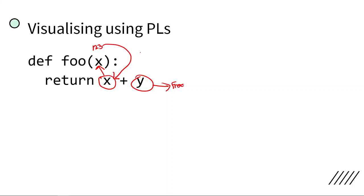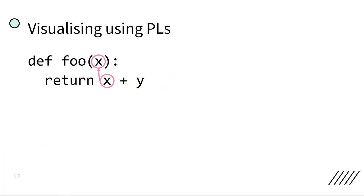Y is a free variable because it was not declared as a parameter of our function foo. So again, x is bound to this parameter, and y is free.